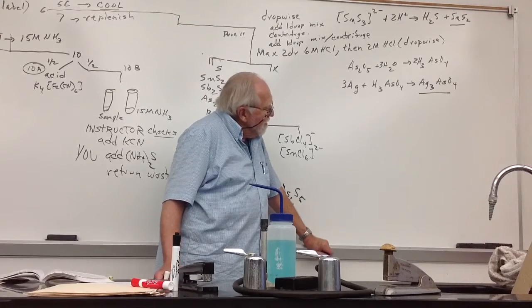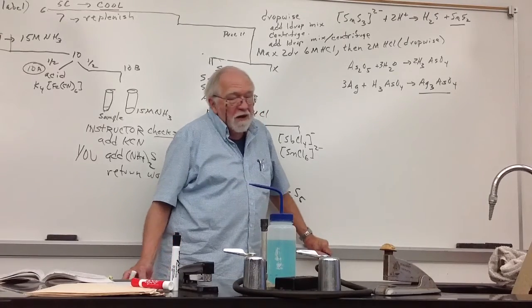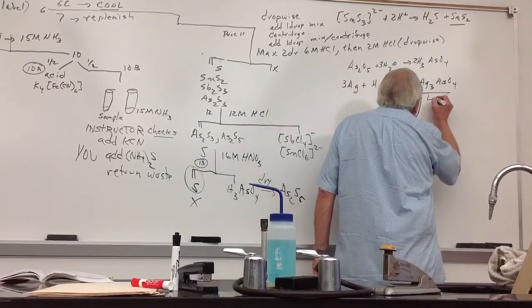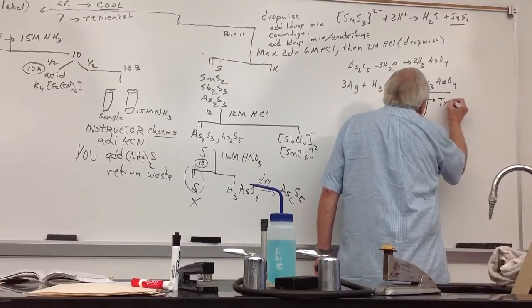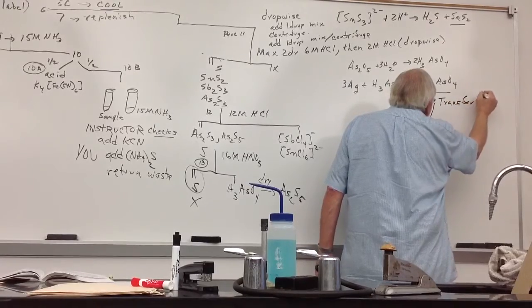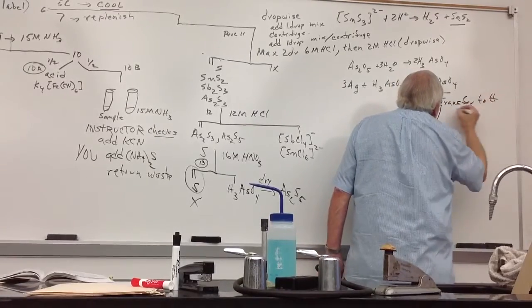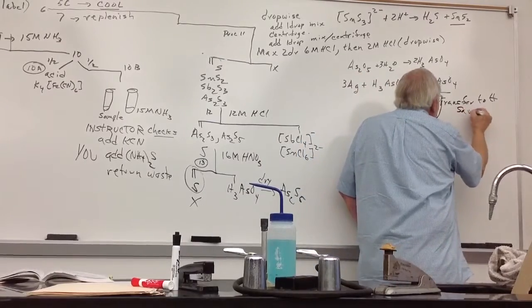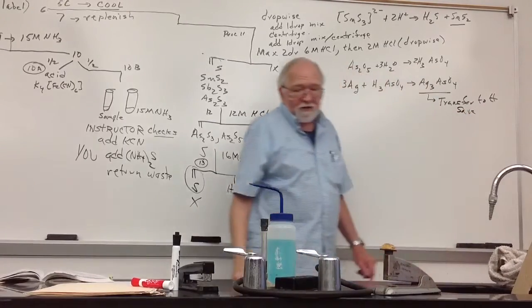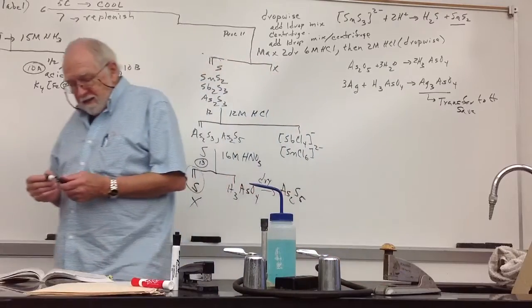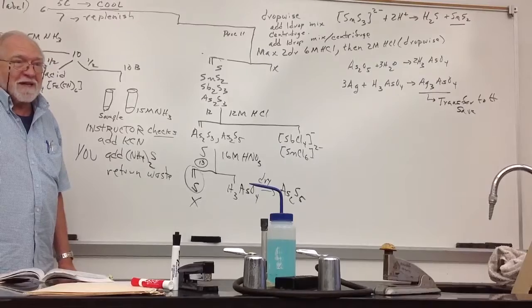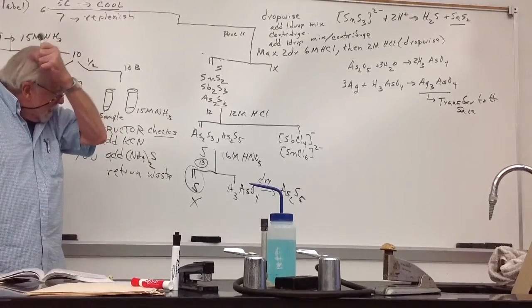Then it doesn't tell you what to do next. You've got this reddish-brown precipitate in the casserole. Transfer to a test tube. Centrifuge and save it. In other words, it leaves you sitting there with the red-orange precipitate in the casserole, and you want to get it into a test tube to save to show me for your confirmatory tests.